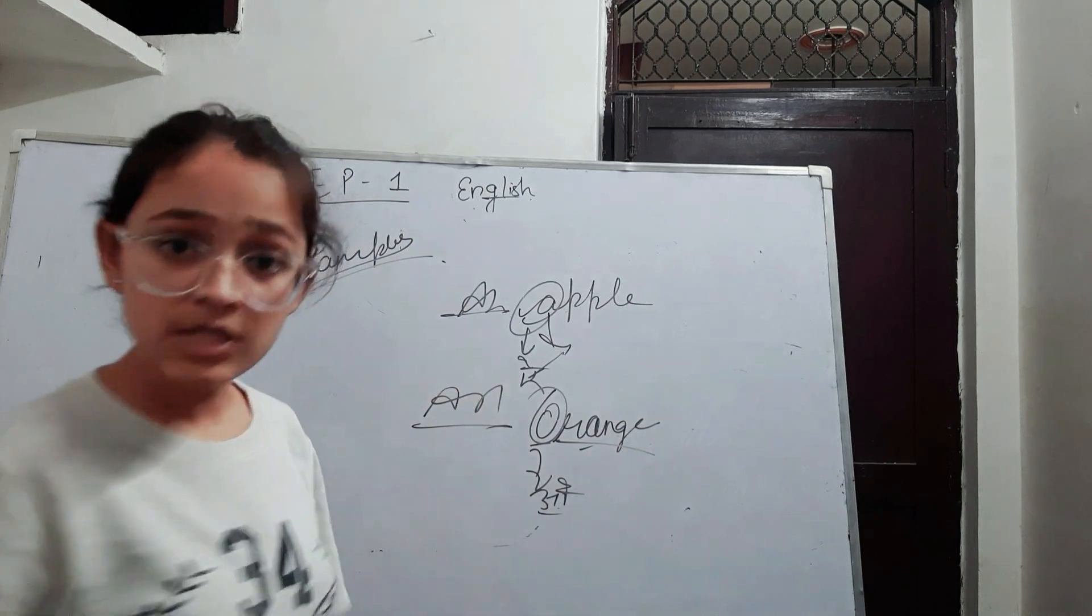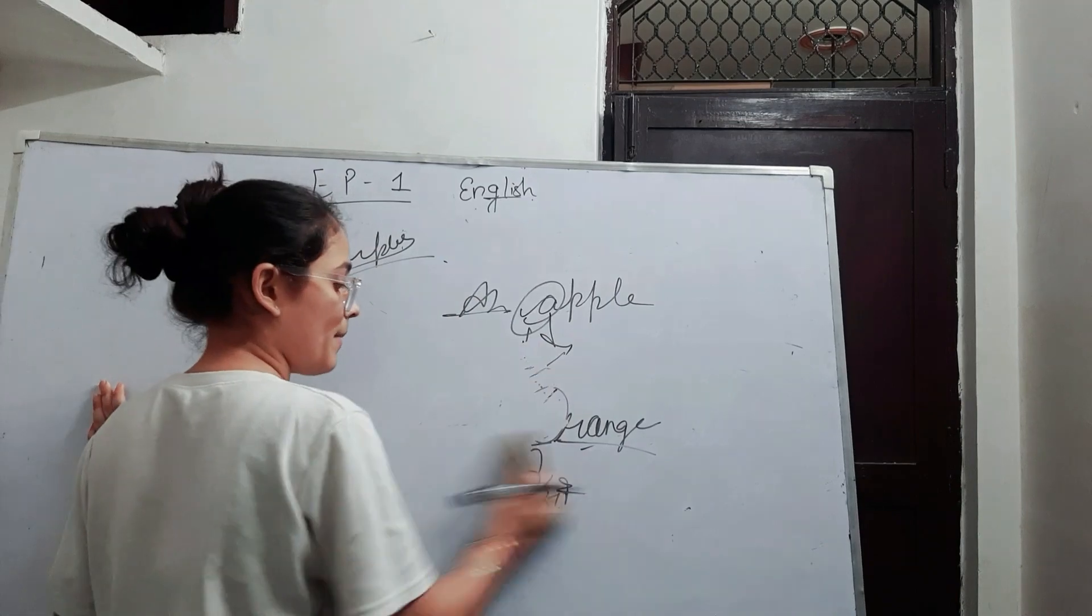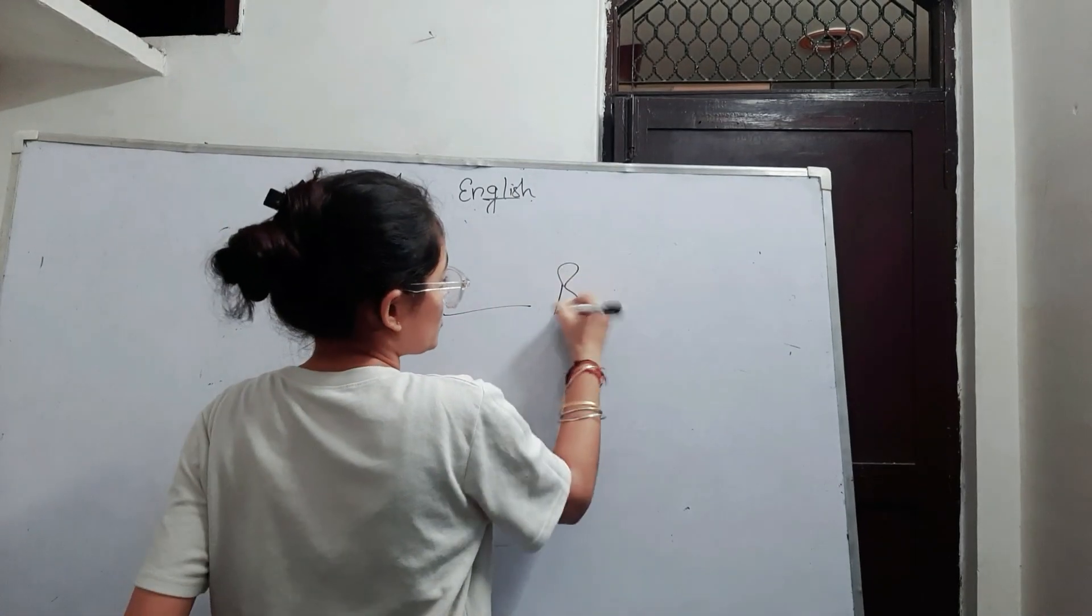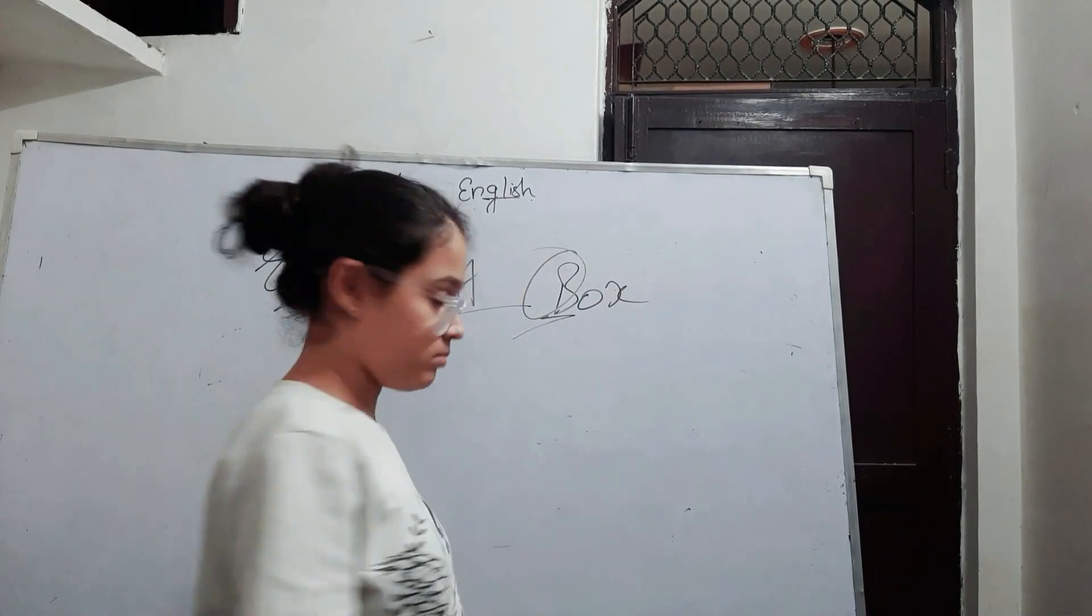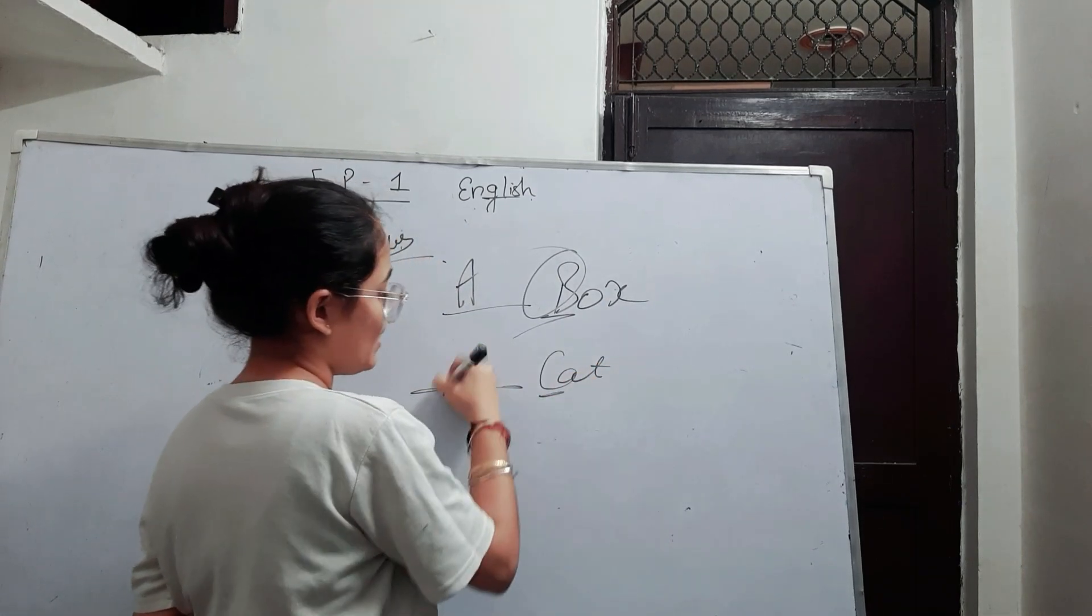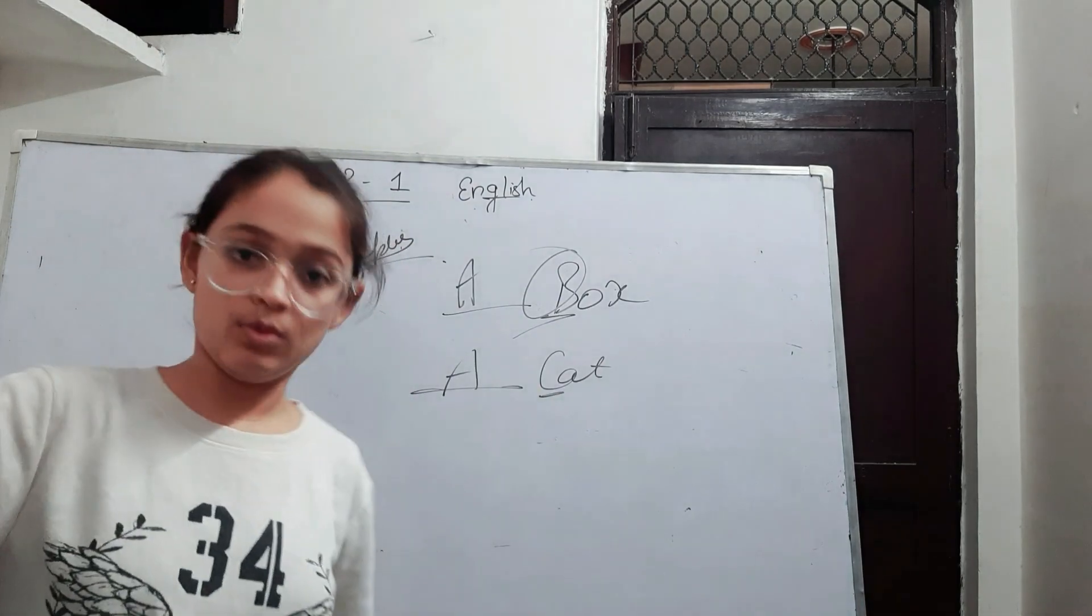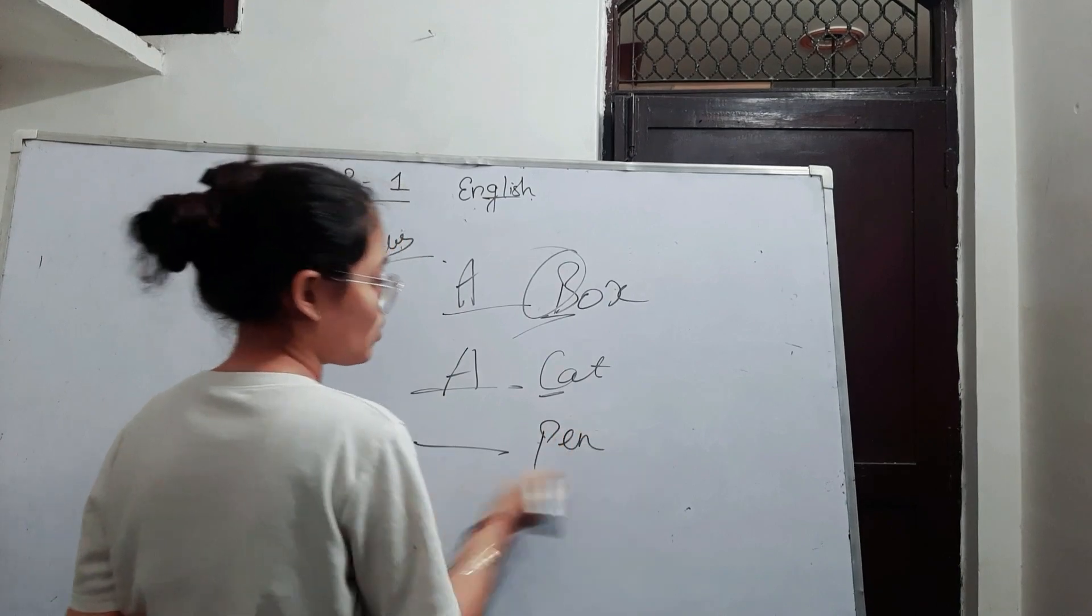'An' - clear, vowels are made with 'an'. 'A box' - B, consonants. 'A can' - C. 'A pen' - P.